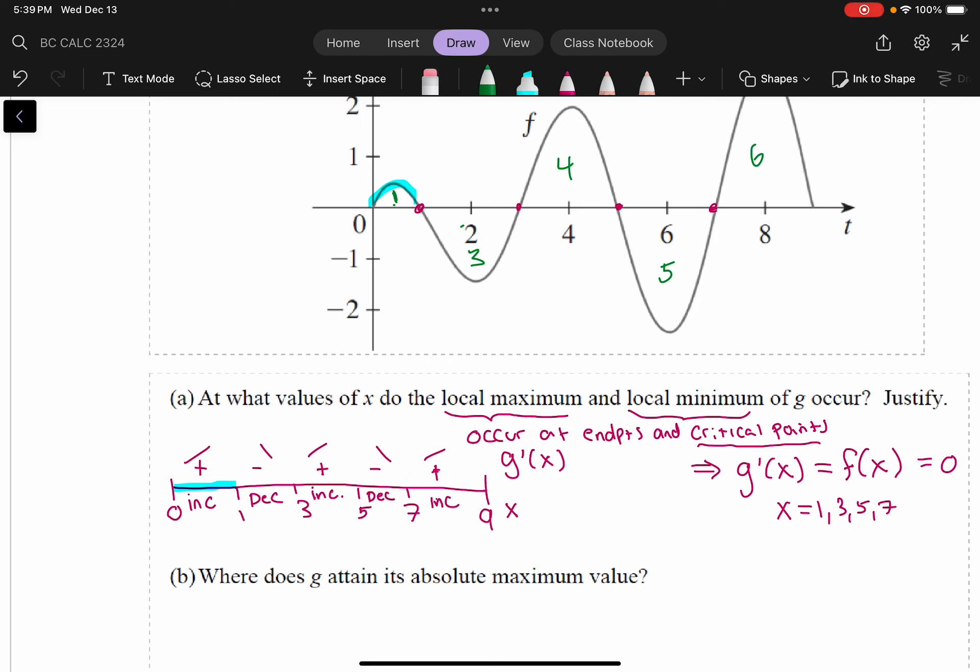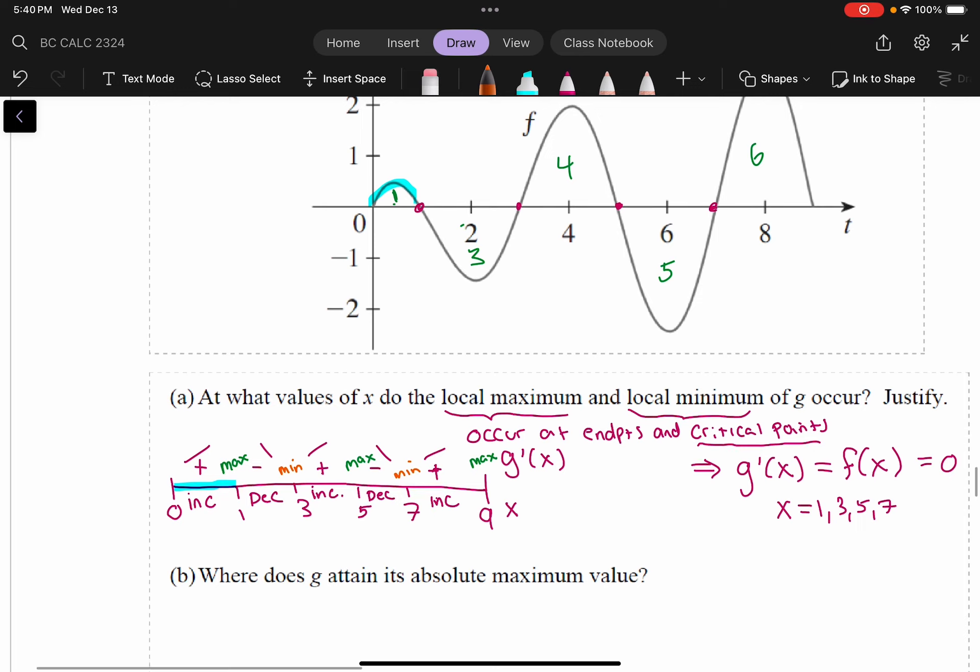And so by the first derivative test, when this first derivative changes from positive to negative, we have a max. So I have a max here. I have a max here. And then at an end point, if your derivative is positive to the left of a right end point, that means the graph rises and then stops. So we have a local max here, too. Whereas we have mins at the other critical points, right? So we have a min where the derivative changes sign from negative to positive. So I have mins there and there. And then I have a min here at 0.